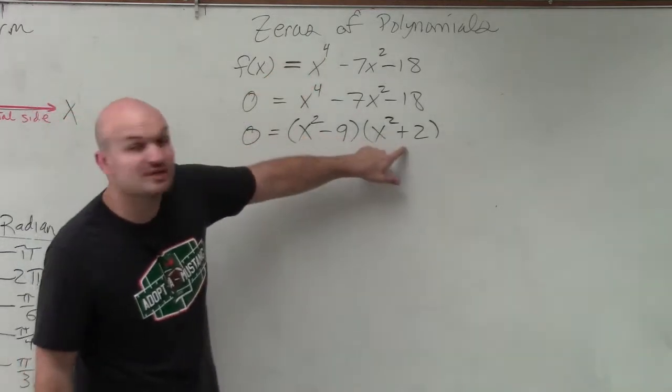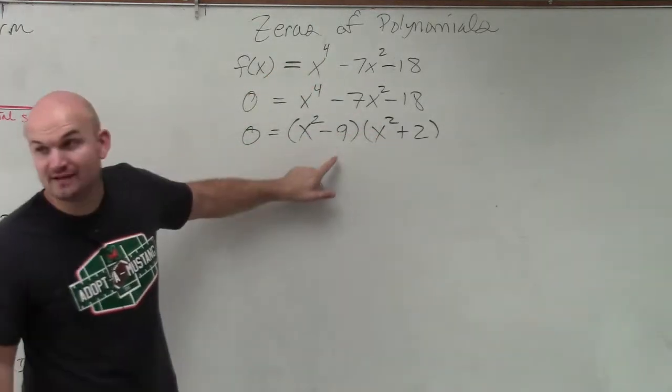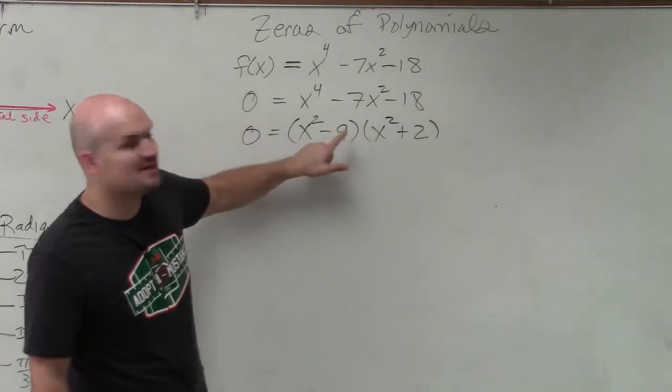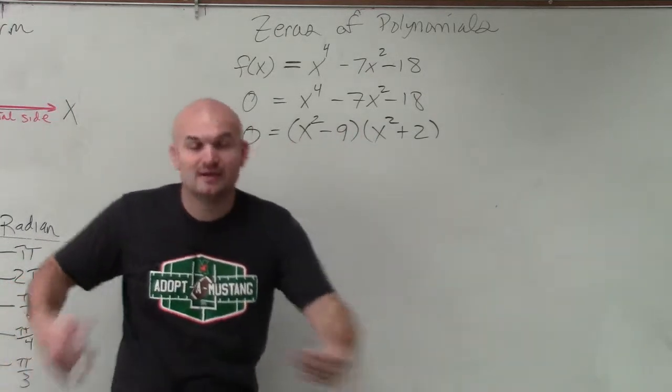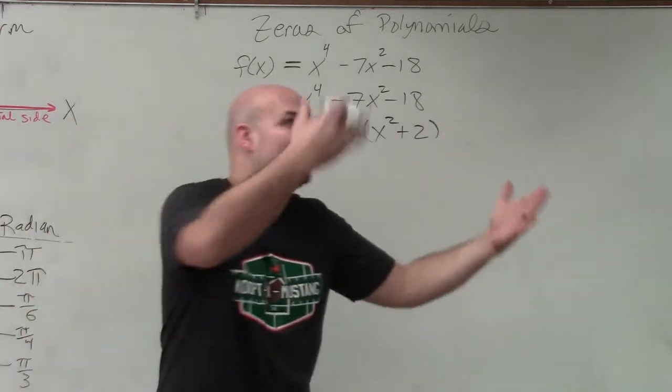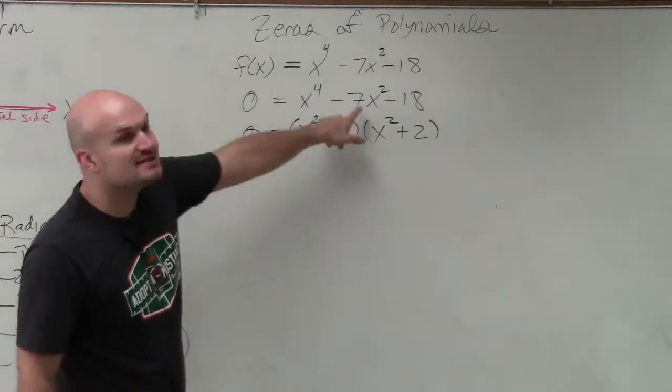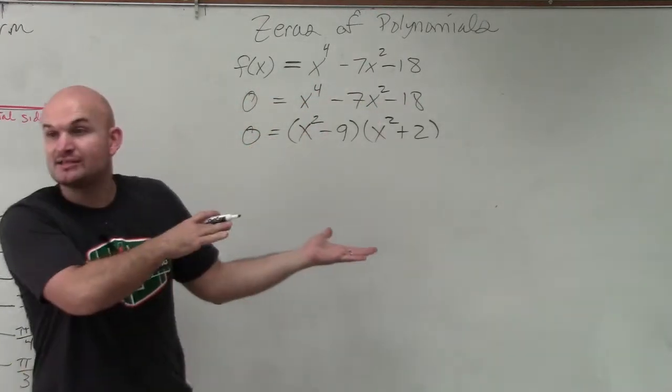x squared times 2 gives you 2x. x squared times negative 9 gives you negative 9x squared. So negative 9x squared plus 2x squared gives you negative 7x squared. Now we apply the zero product property.